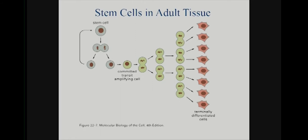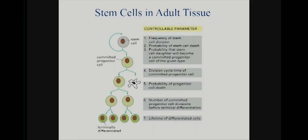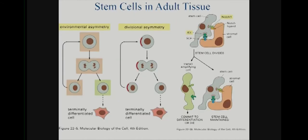All of these are controllable parameters: the frequency of stem cell division, probability of stem cell death, probability that a stem cell daughter will become a committed progenitor, and the cell cycle time of committed progenitors. These are presumably set by different aspects of the biology. This particular fork is interesting — does something get handed down to one daughter cell but not another? Sometimes that is the case, and sometimes it's an environmental cue that creates this asymmetry. Sometimes it appears intrinsic: the cell knows to hand off something to one daughter cell but not another.